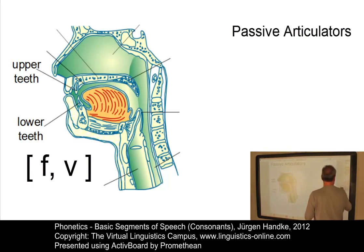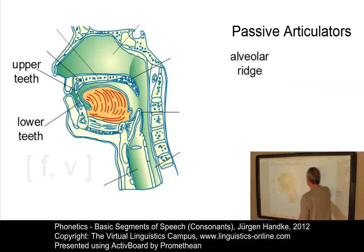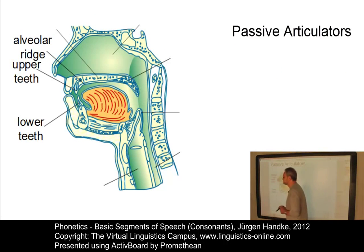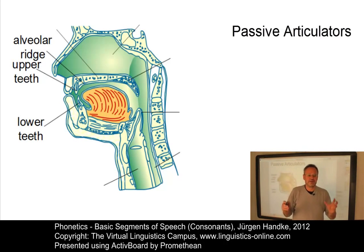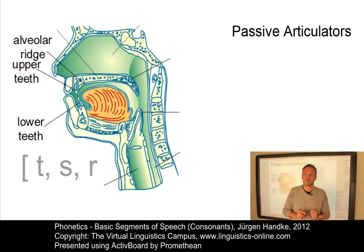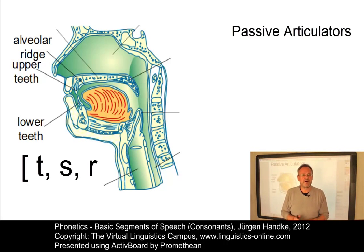Another passive articulator is the alveolar ridge. The alveolar ridge is an area for the articulation of many consonants. It is situated just behind the teeth. Typical consonants produced here include [t], [s], or [r].